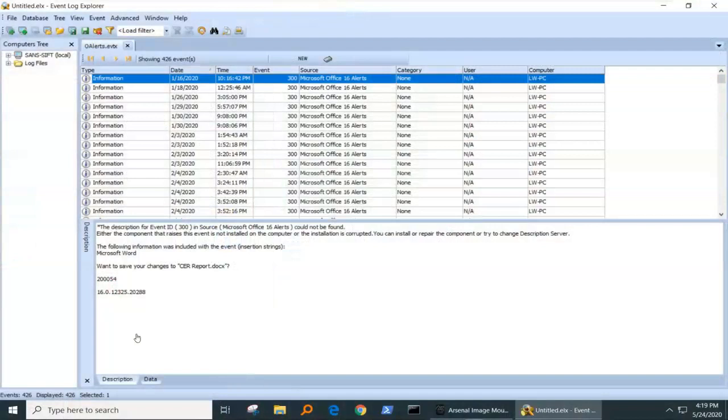So we're looking at O-Alerts event log mounted in Event Log Explorer, and as you can see, there's 426 events. This is not an untenable amount. I haven't filtered any out. This is the amount from a normal production computer.